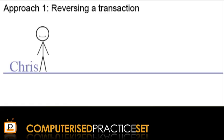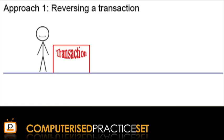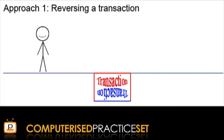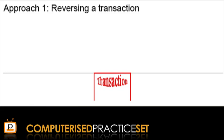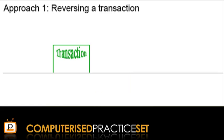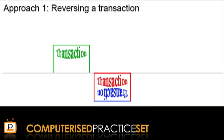Meet Chris. Chris has a transaction, but there is a problem — it's the wrong transaction. To reverse this transaction, Chris must construct a transaction that is the exact opposite. These two transactions work together to exactly cancel each other out, leaving the situation clear to bring in the correct transaction. Notice when reversing a transaction and entering the correct transaction, there are actually three components: the original transaction, an exact opposite transaction that cancels it out, and the final correct transaction. All three components will forever exist in the accounts.